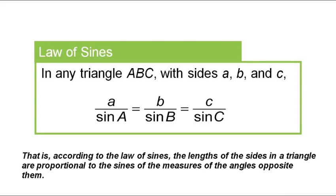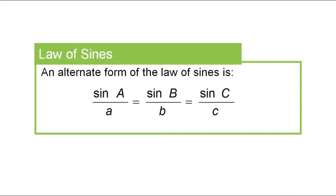Here's another way that we normally see it too, with the side on the top and the sine in the bottom. The same three fractions just turned over. You can see that according to the law of sines, the lengths of the sides in a triangle are proportional to the measures of the angles opposite to them.